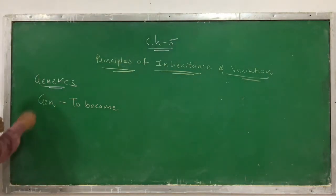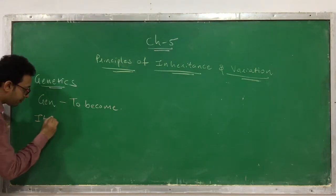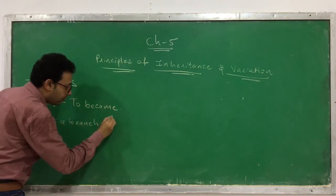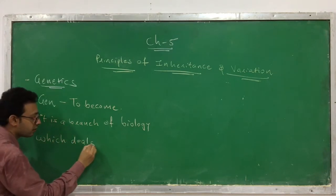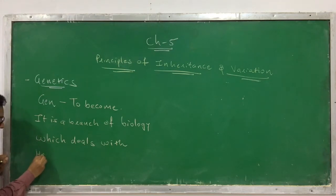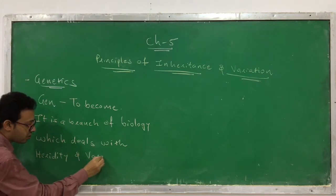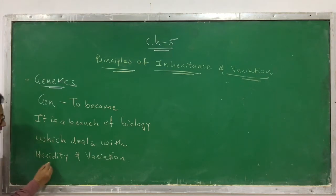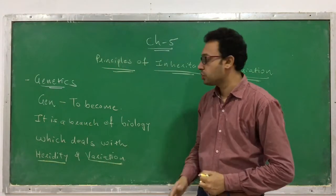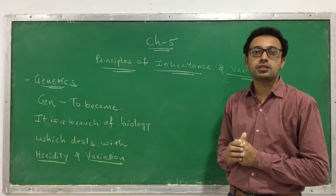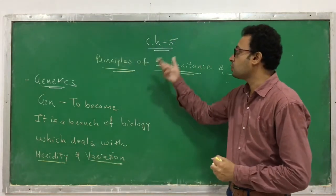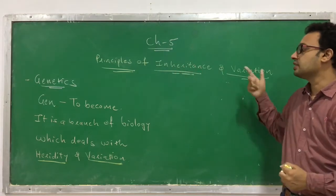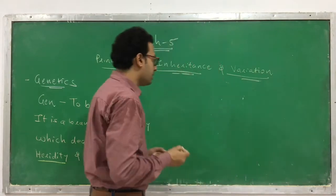Genetics is a branch of biology which deals with heredity and variation. The genetics chapter is based on these two principles: heredity and variation. So let's discuss what heredity is.